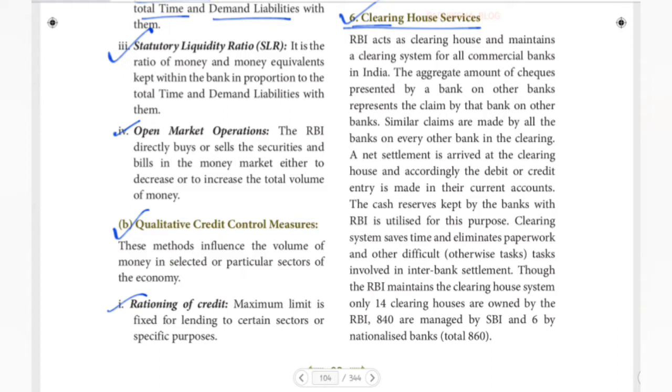A net settlement is arrived at the clearing house, and accordingly the debit or credit entry is made in their current accounts.